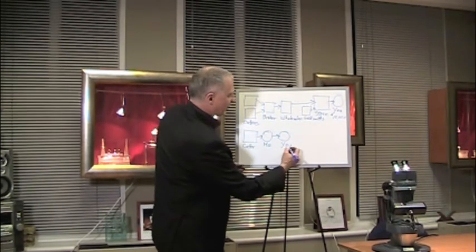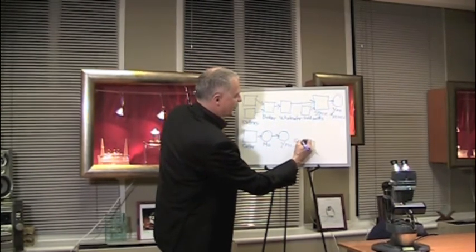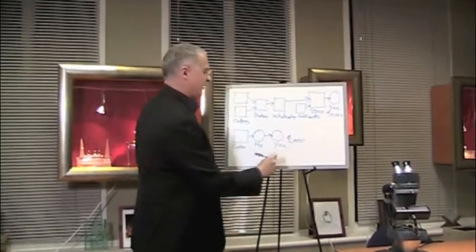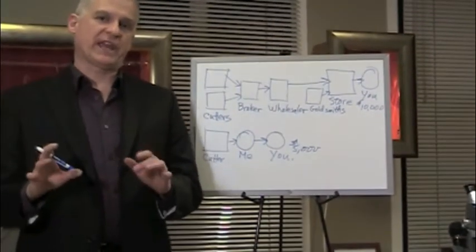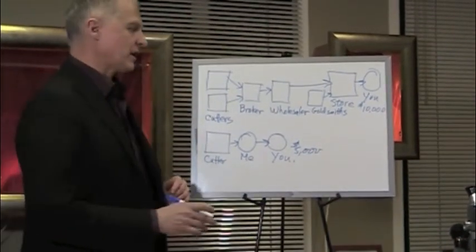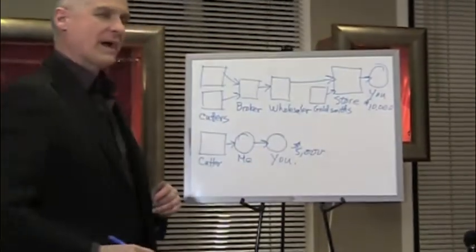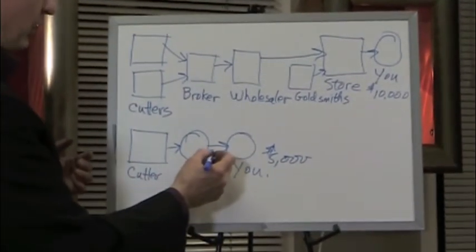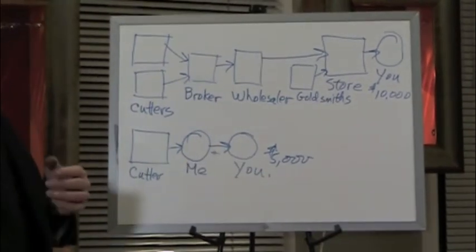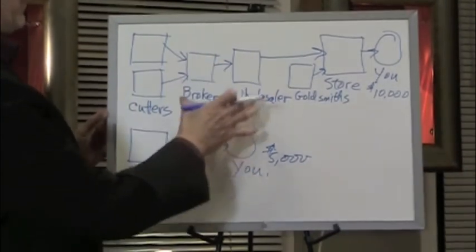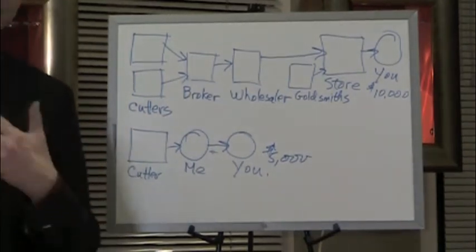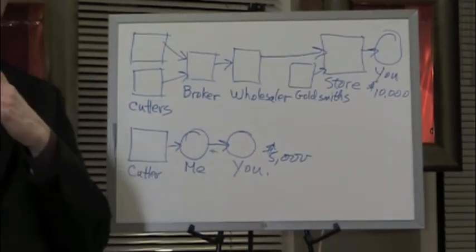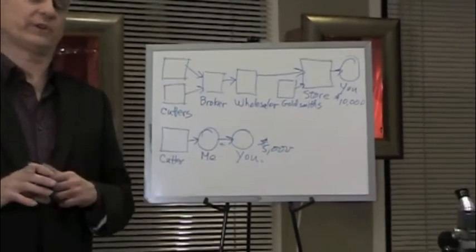So the supply chain here is so condensed that now I'm selling to you for $5,000. And believe it or not, in most cases, I'm selling to you, a member of the public, cheaper than a jewelry store can buy it for. And how can that be? Well, quite simply, I put a very small markup on the internet. And my markup is less than the broker and the wholesaler combined. So it's a bit of an upside down world where you're buying your diamond cheaper than your local jewelry store.